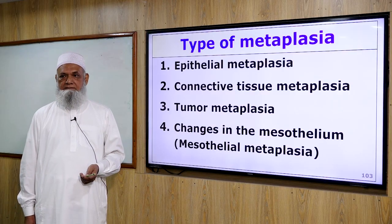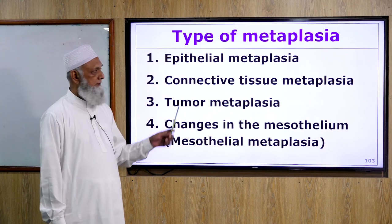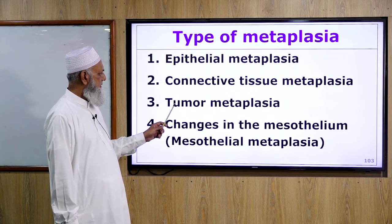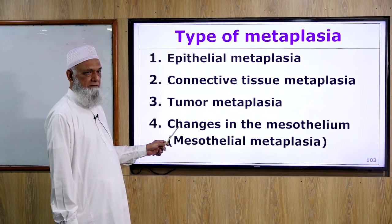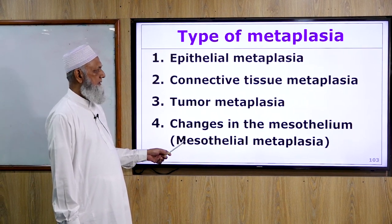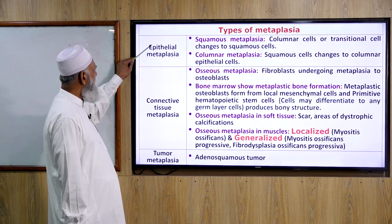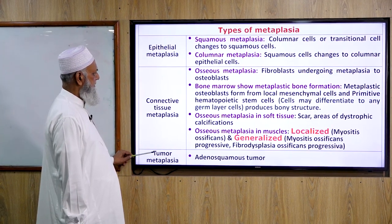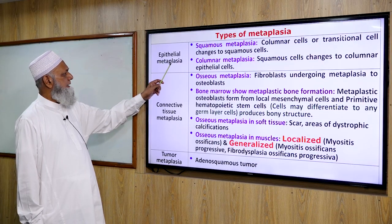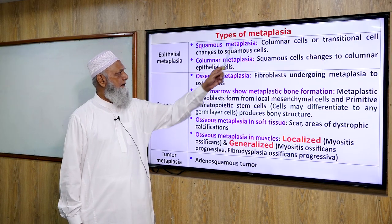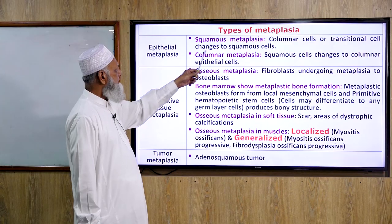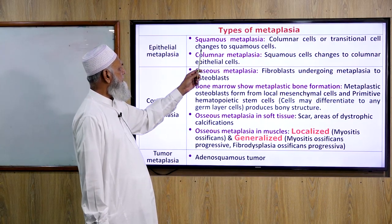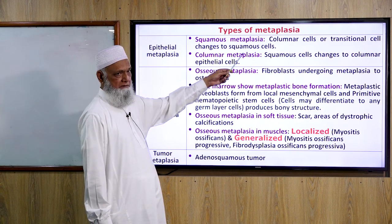Types of metaplasia: There are 4 types — epithelial metaplasia, connective tissue metaplasia, tumor metaplasia, and mesothelial metaplasia. Epithelial metaplasia is divided into squamous metaplasia and columnar metaplasia. In squamous metaplasia, columnar cells or transitional epithelial cells change to squamous cells. In columnar metaplasia, squamous cells change to columnar epithelial cells.